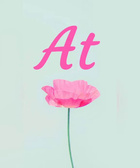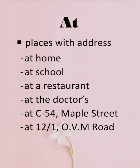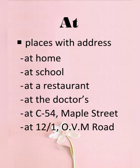First up, we have 'at.' 'At' tells us that the noun is located at a particular place. When do we use 'at'? For places with an address: at home, at school, at the restaurant, at the doctor's, at 54 Maple Street, at 12 Byron Road. That is, places that have an address.